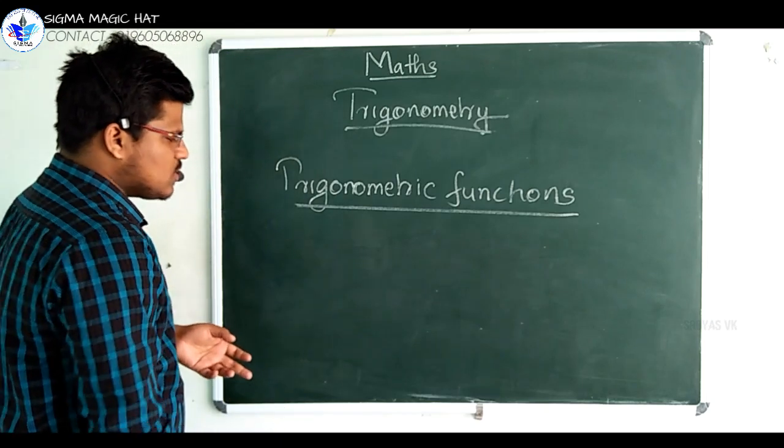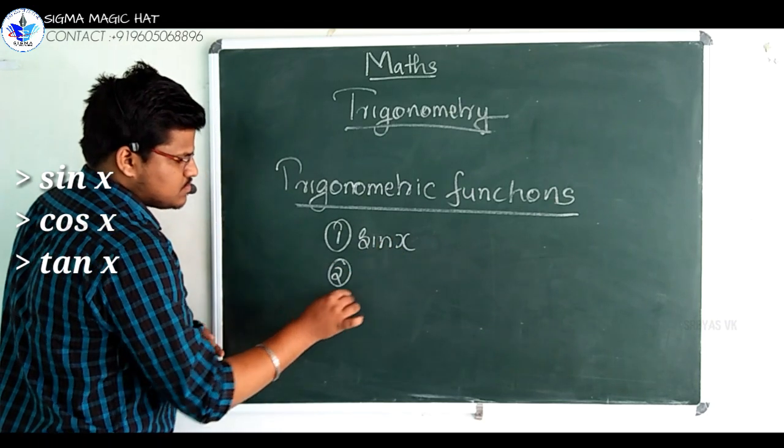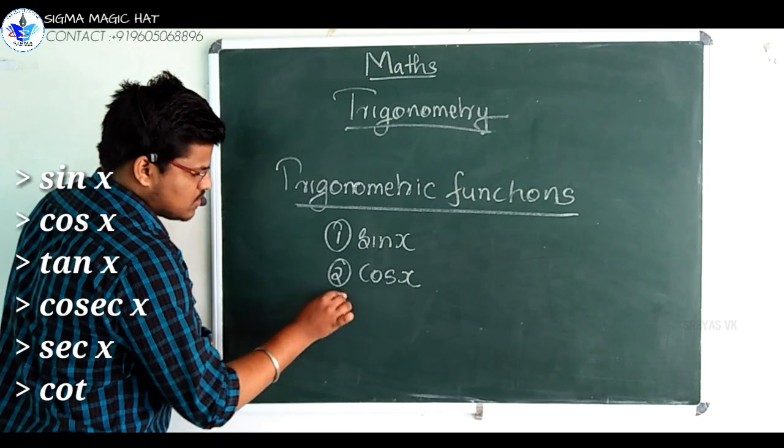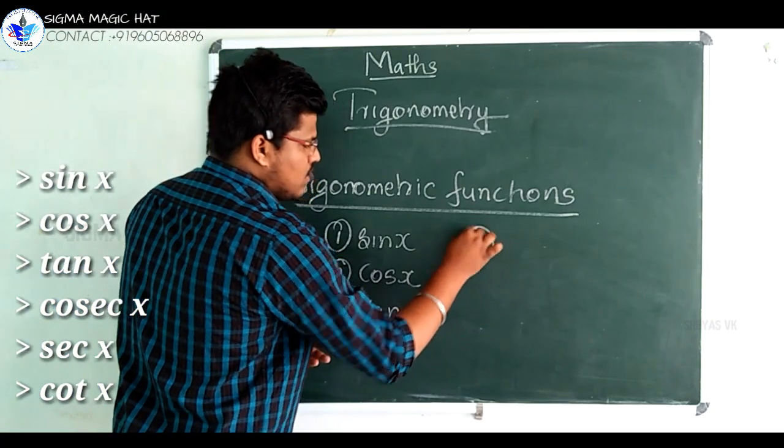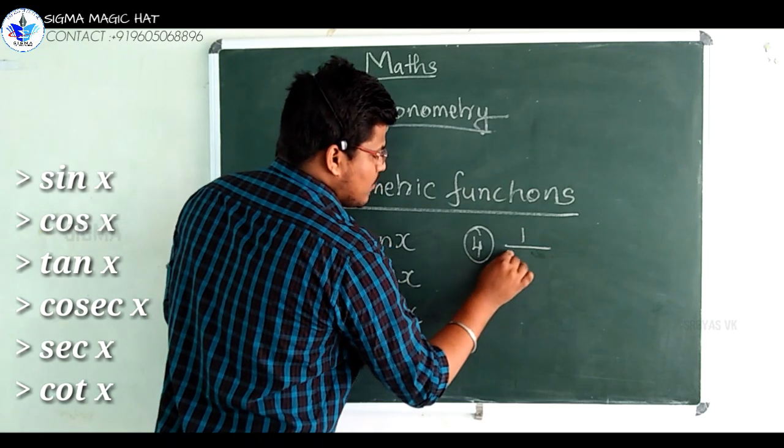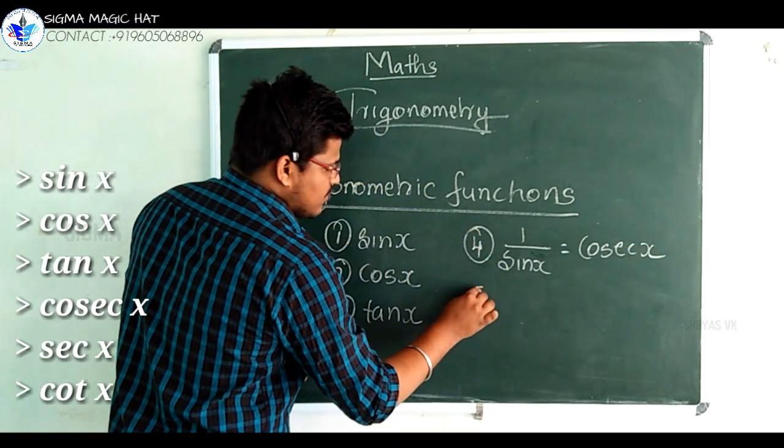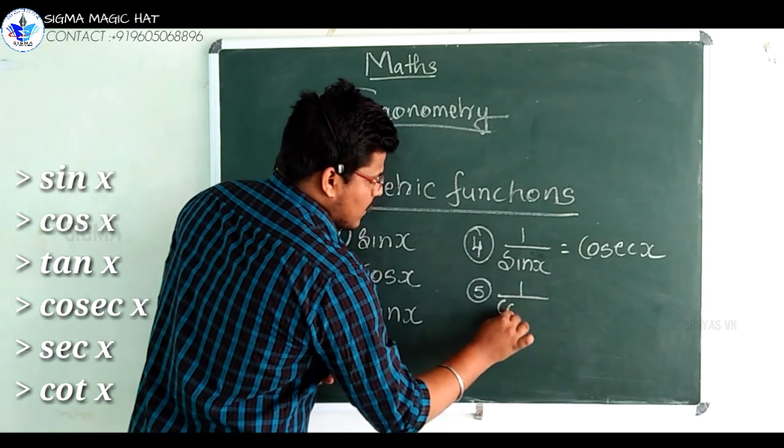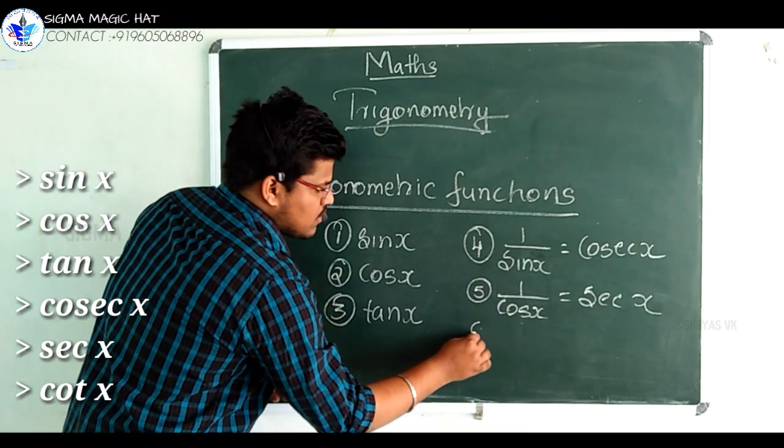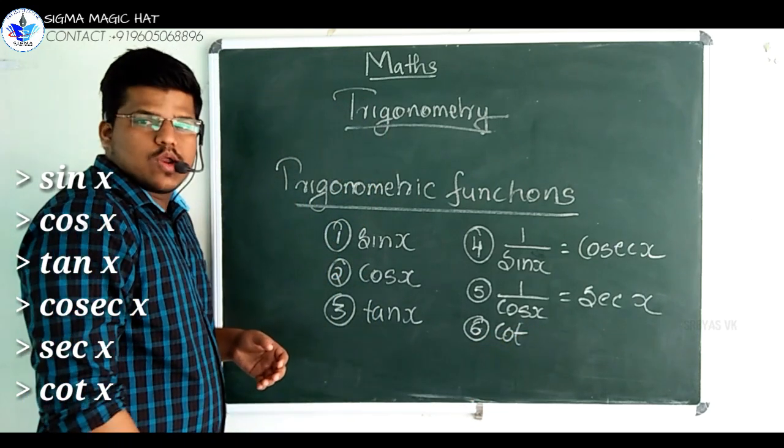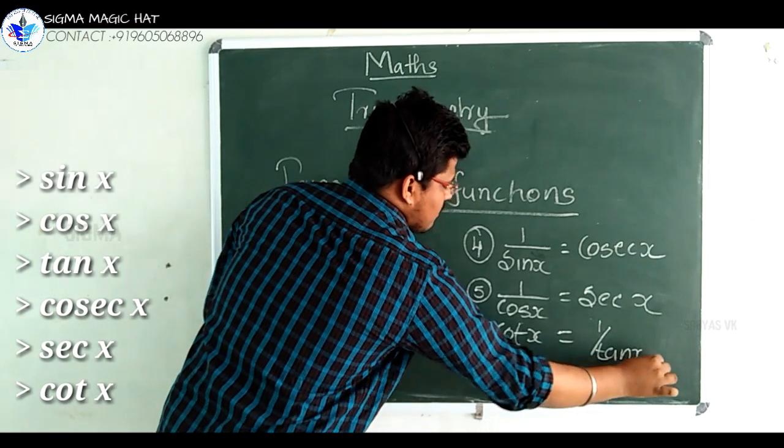The first one is sin x, and the second one cos x, and the third one tan x. And the fourth one is the reciprocal of sin x: 1 by sin x is equal to cosec x. And the fifth one is the reciprocal of cos x: 1 by cos x is equal to sec x. And the sixth one cot x, which is the reciprocal of tan x: 1 by tan x.